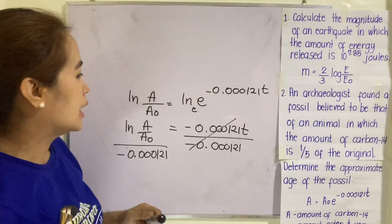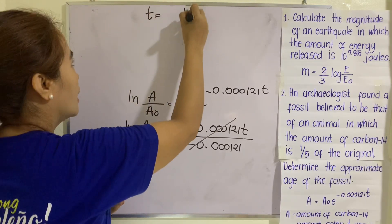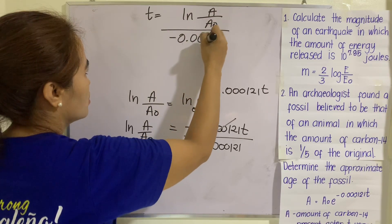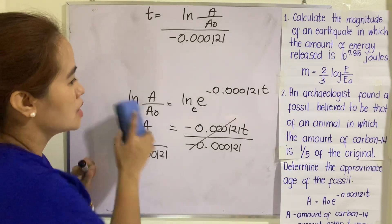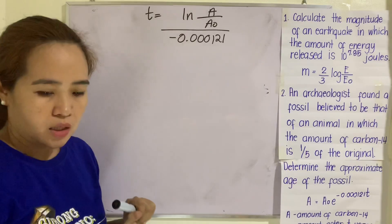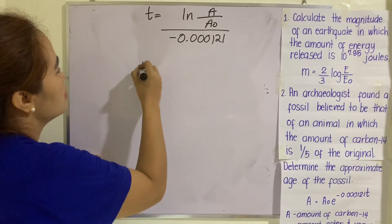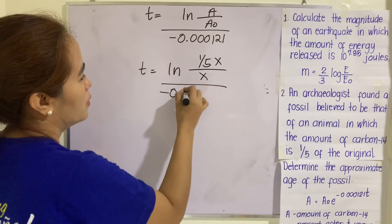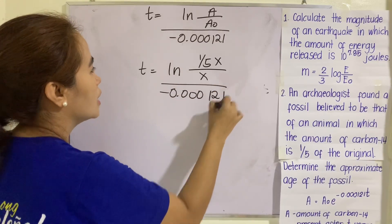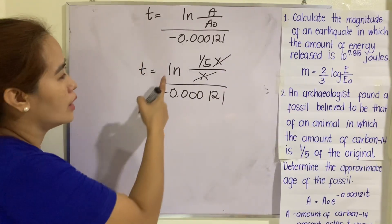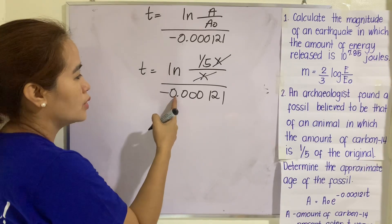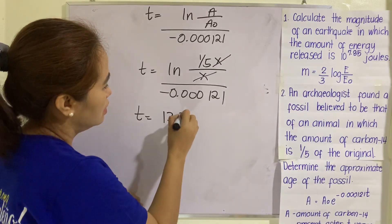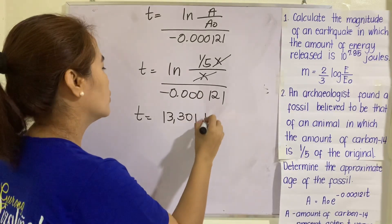Using the formula: T equals ln(A/A sub-zero) divided by negative 0.000121. Since the amount present is one-fifth of the original, A is (1/5)x and A sub-zero is x. These cancel, leaving ln(1/5) divided by negative 0.000121. Therefore T equals approximately 13,301.14 years.